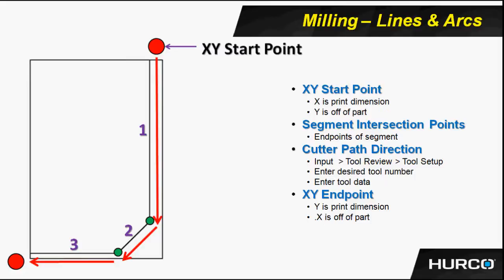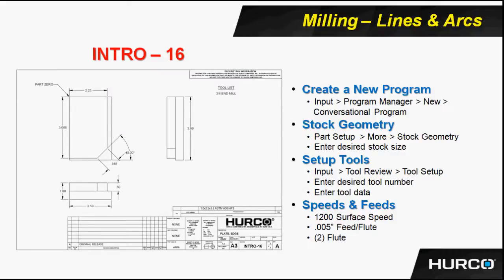Here's the program we're going to use. The starting X value is 2.25 — a known print dimension — so that's my X start for this feature. However, the Y start will be some distance off the part, above it in this case, so we need to pick a value there — maybe a half inch, slightly larger than the tool radius. Using these rules, with segment zero as your starting point and the next segment for your lines, try to program intro 16. You'll start in the upper right corner, come straight down, then move left to your final point. Intro 16 will have a separate video walking you through it step-by-step if you need that instruction.